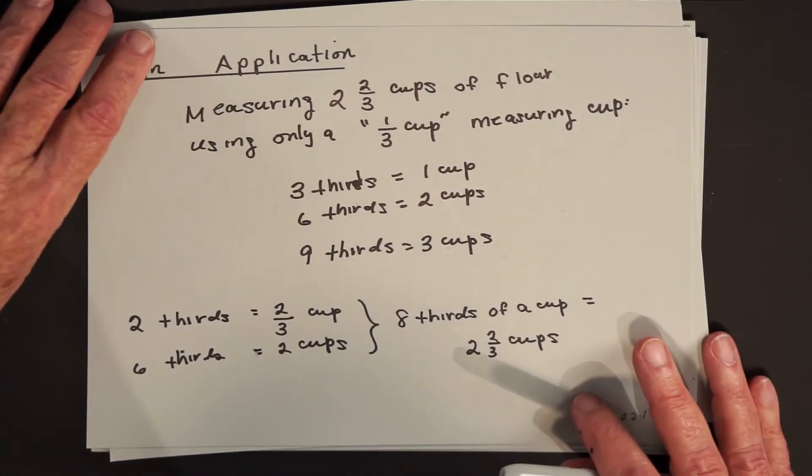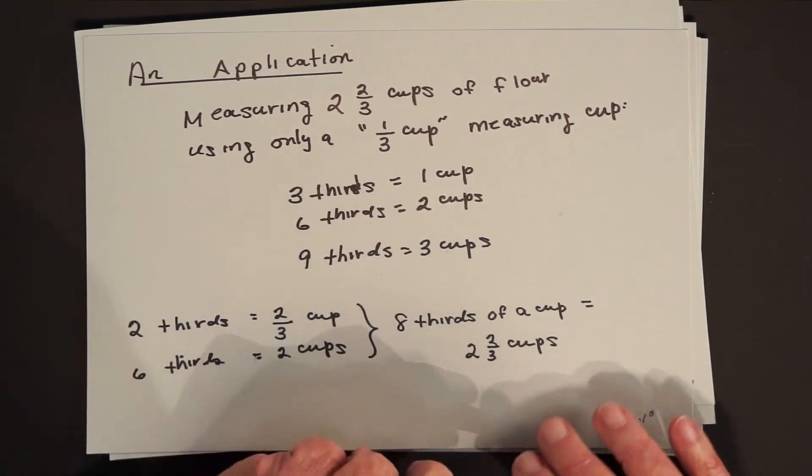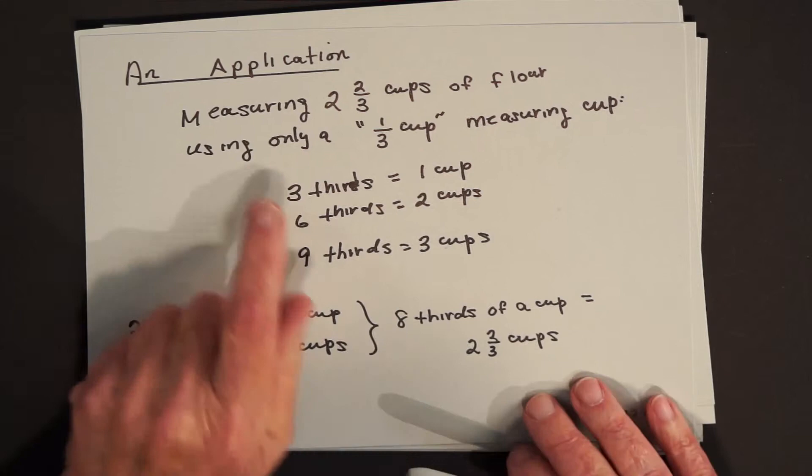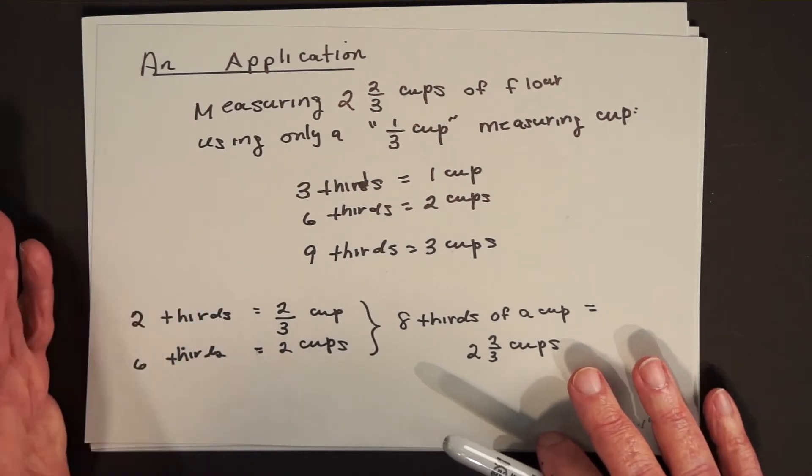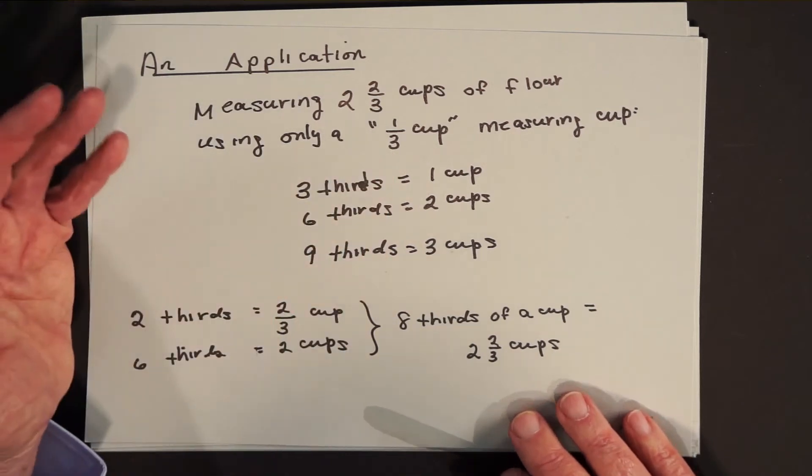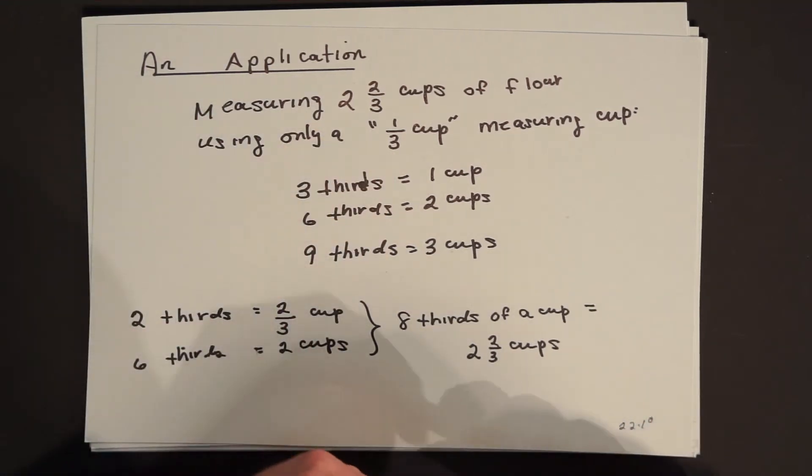Here, here's an application. I want to measure two and two thirds cups of flour, but all I have is a one third cup measuring cup. So the question is, how many times must I fill up the one third cup to get two and two thirds cups? So watch how this becomes a whole number problem.